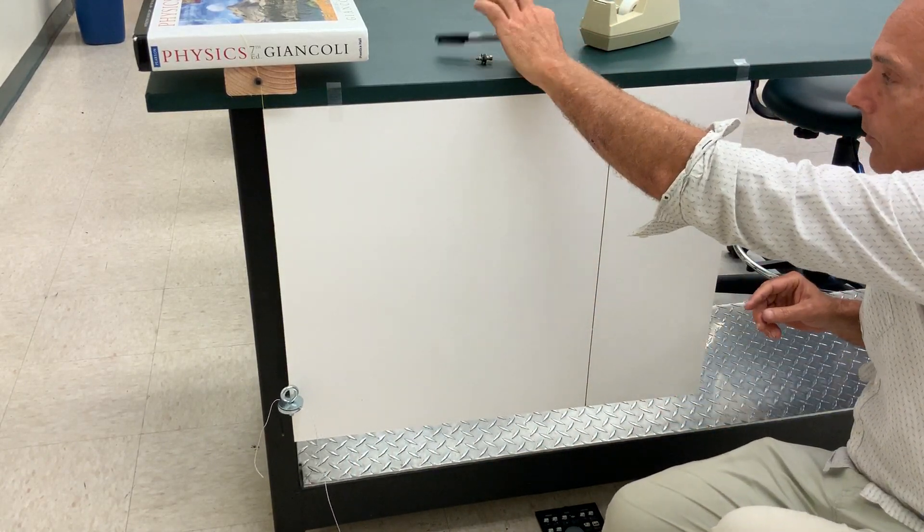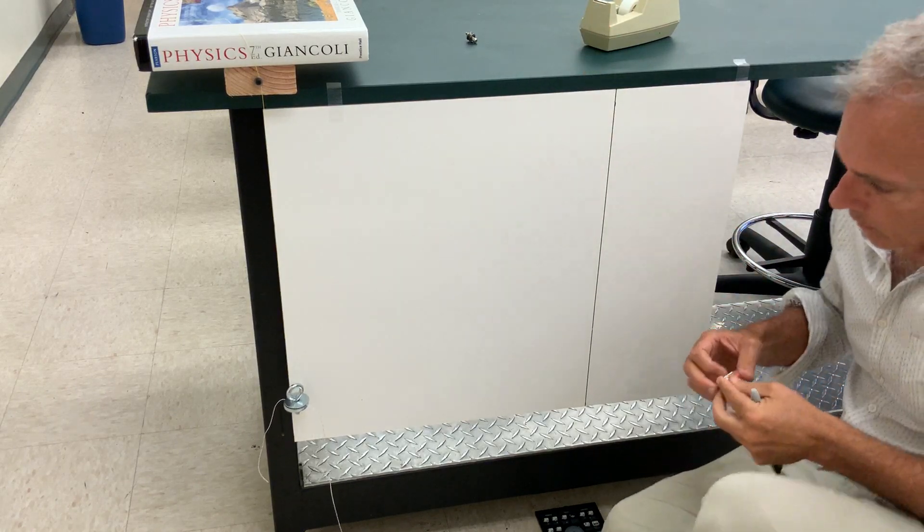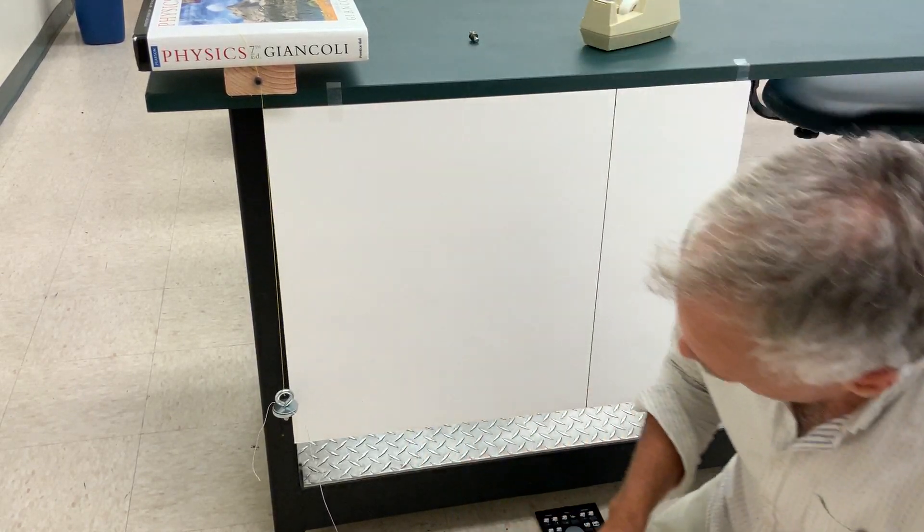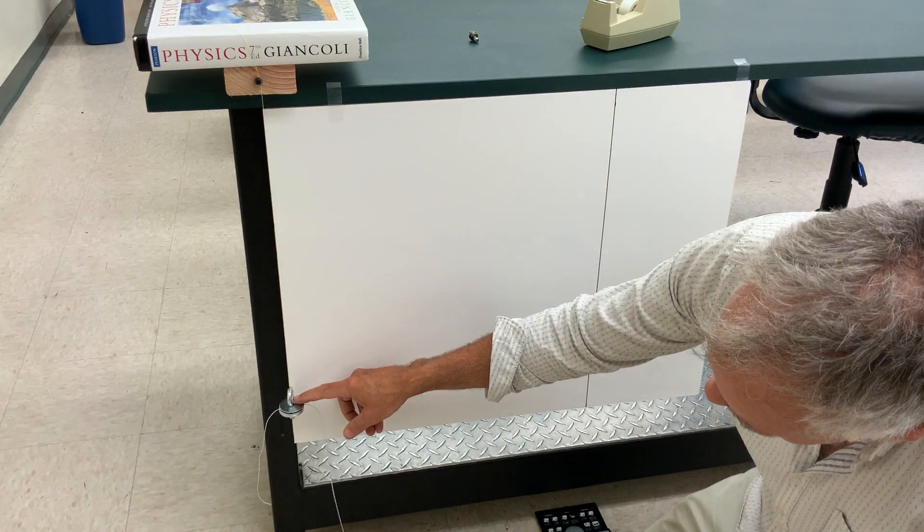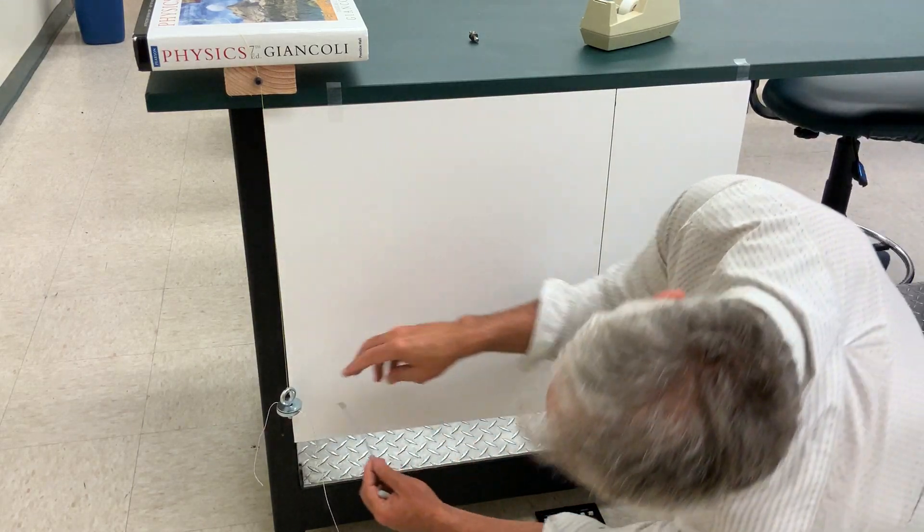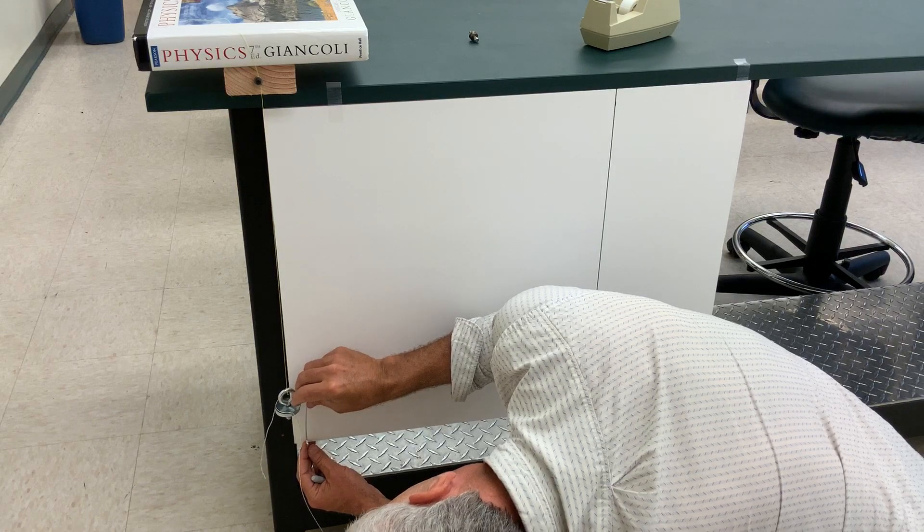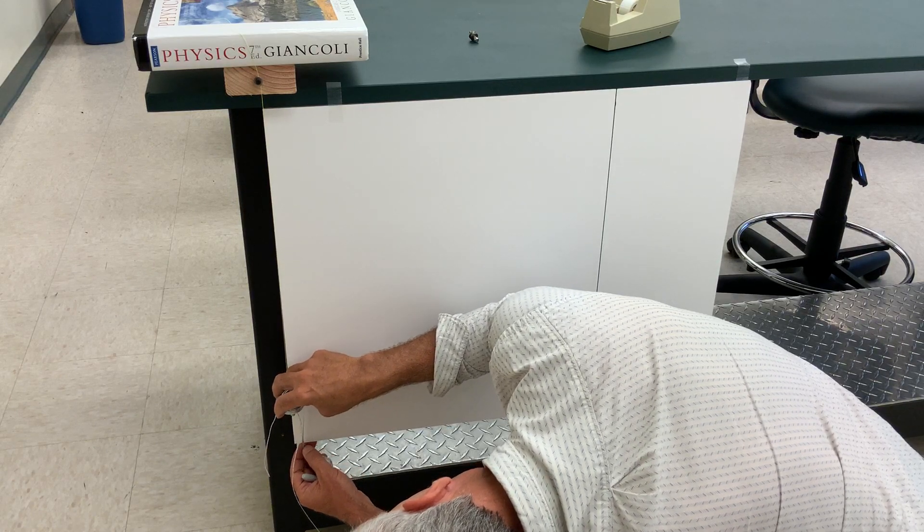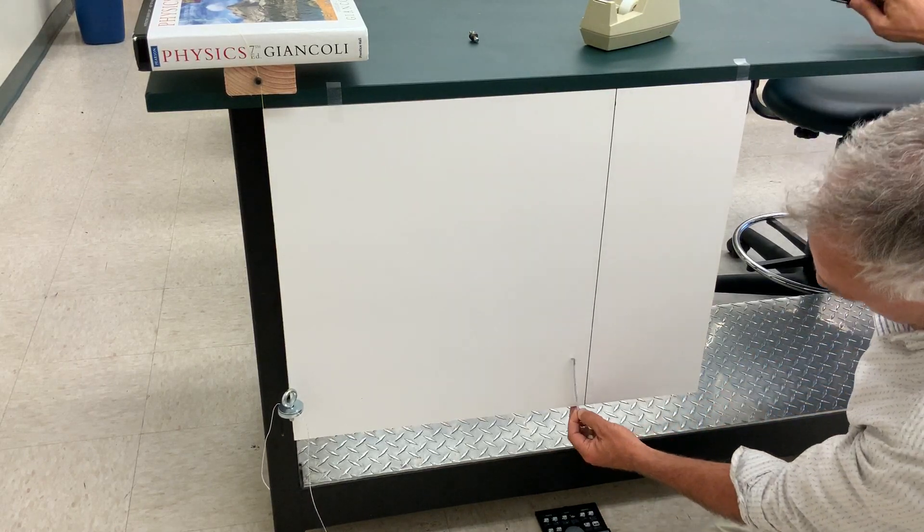All right, so now what we need to do is measure from the top of this thing down to the bottom of the paper. So we make that measurement and we transfer it over to this side.